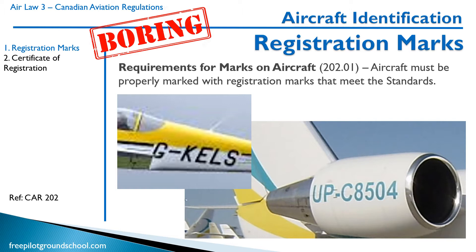And then on the right, we have a jet, UP C8504. I have no idea where this jet's from, but UP is another country, and then C8504 would be the individual registration mark of that airplane. In Canada, everything starts with either a CF or a CG. In the US, it's N and then a number.